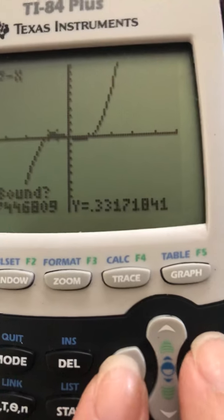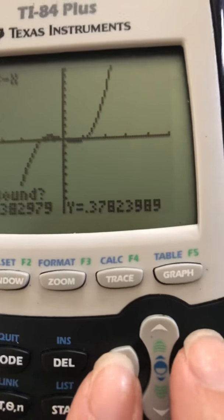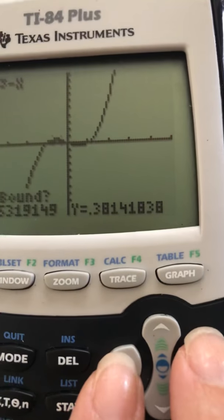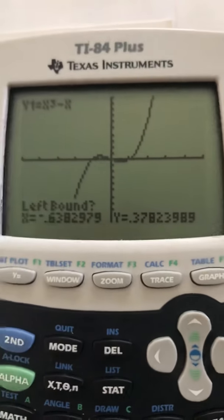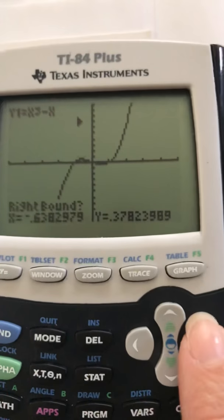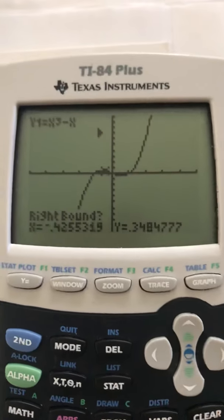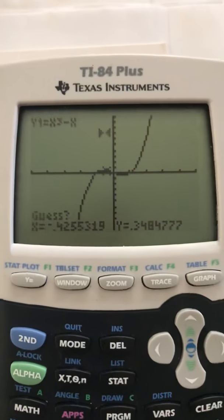So that's going up, up, up, up, down. So I'm going to go back to. That's the left bound. I'm going to go back right to. That's my right bound. And guess.